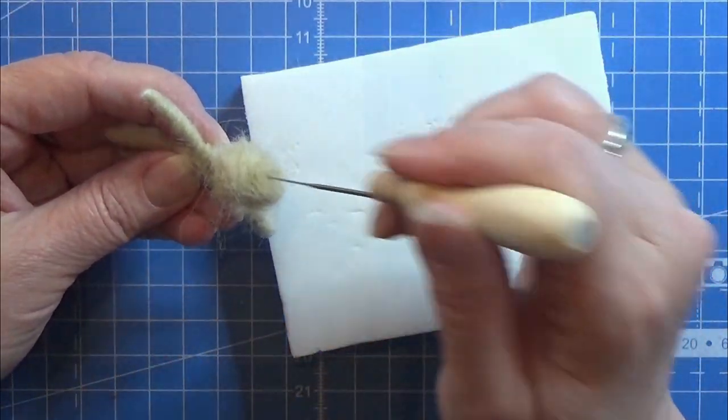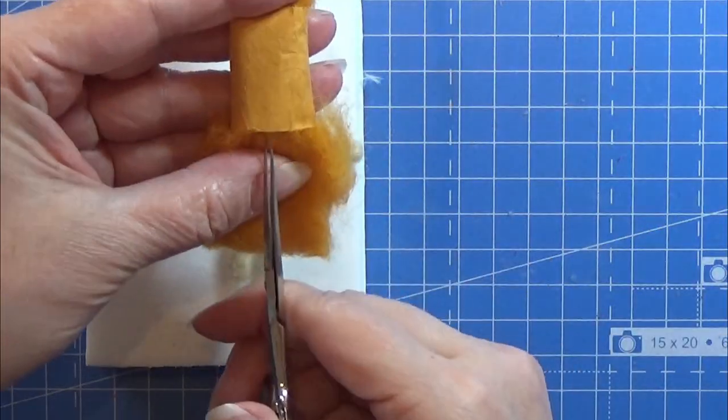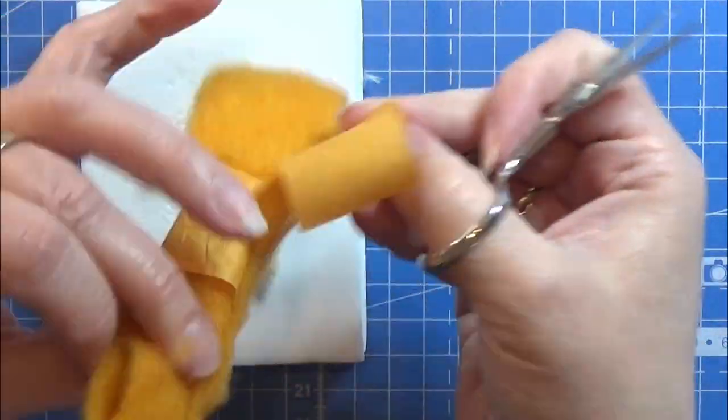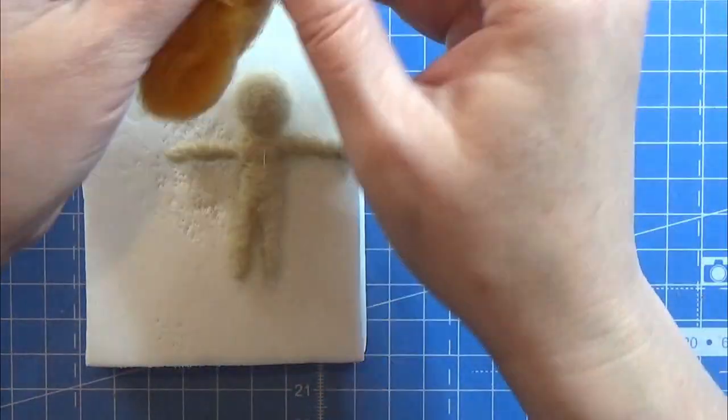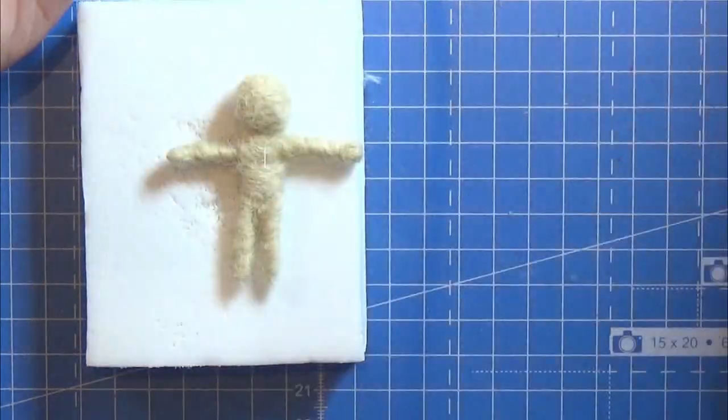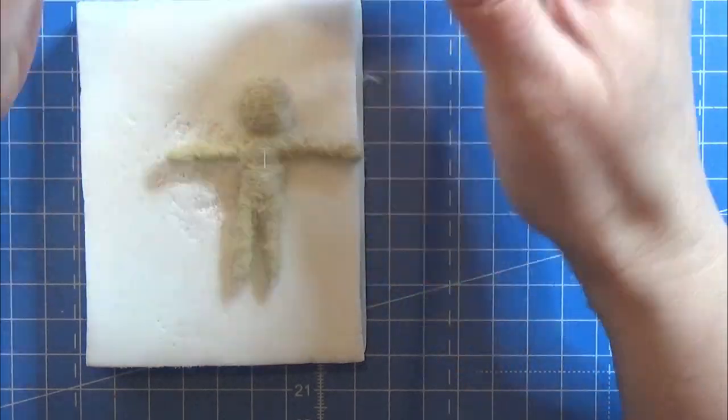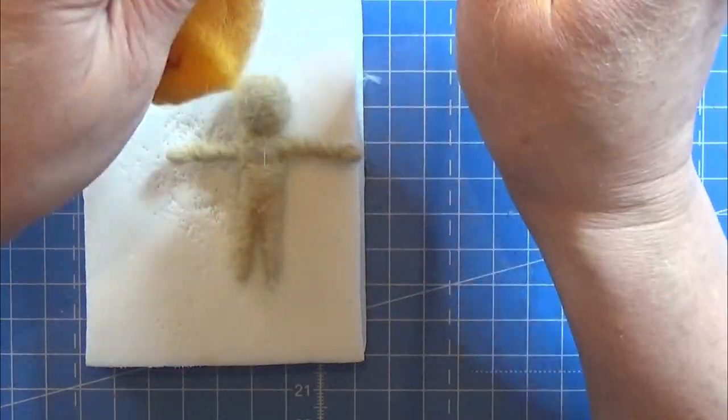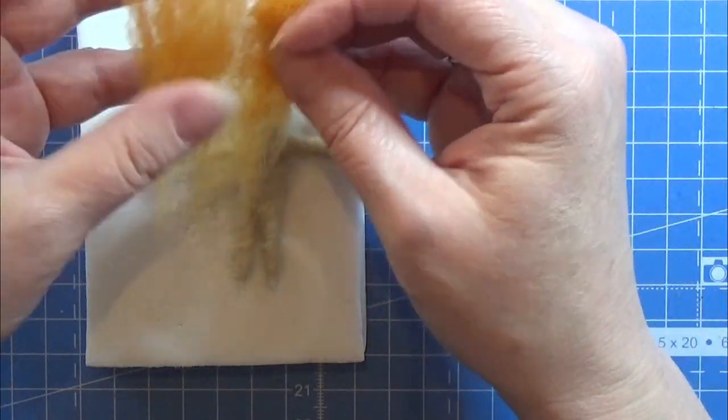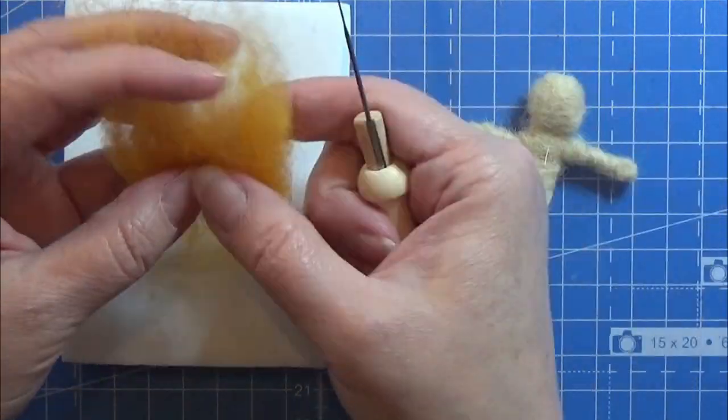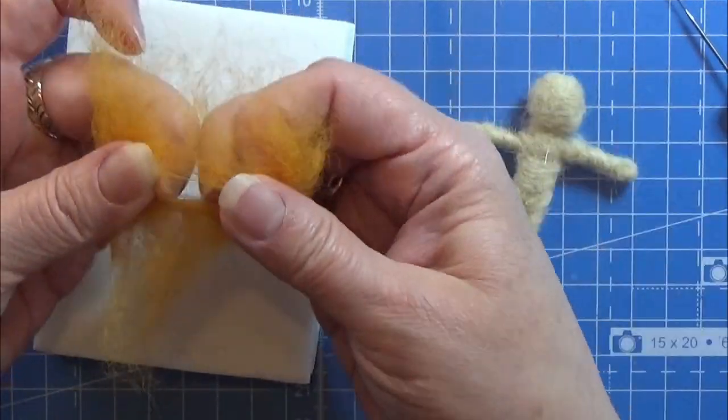Now for the dress, this is a little more complicated. I'm just going to take the color that I want for it, and I chose this orange one. I'm pulling out a piece of that, and I'm making a hole here in the middle.